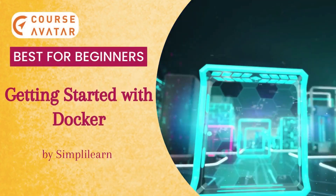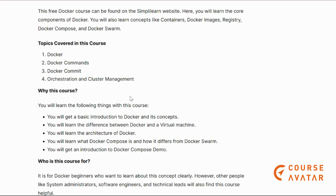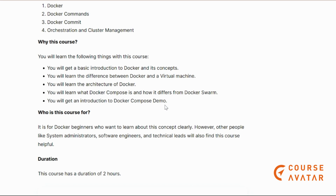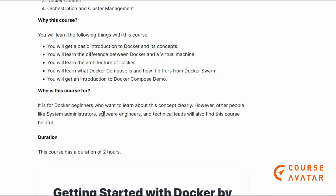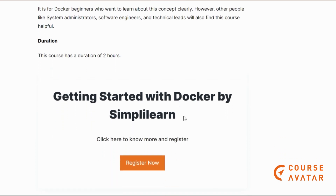Our fourth course is Getting Started with Docker by Simply Learn. Here you will learn the core components of Docker including containers, Docker images, registry, Docker Compose, Docker Swarm, and Docker commit. You will also learn the difference between Docker and virtual machines, the architecture of Docker, and get an introduction to Docker Compose with a demo. This course is for Docker beginners, system administrators, software engineers, and technical leads.